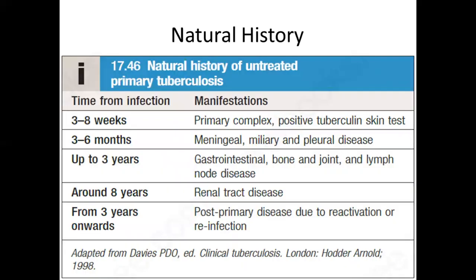Moving on to the natural history timeline: in cases of primary tuberculosis, after three to six months the patient may present with meningeal or pulmonary disease. Up to three years, the patient may present with gastrointestinal, bone, joint, or lymph node disease. Around eight years, the patient may present with renal tract disease. From three years onward, it is usually post-primary disease due to reactivation or reinfection.